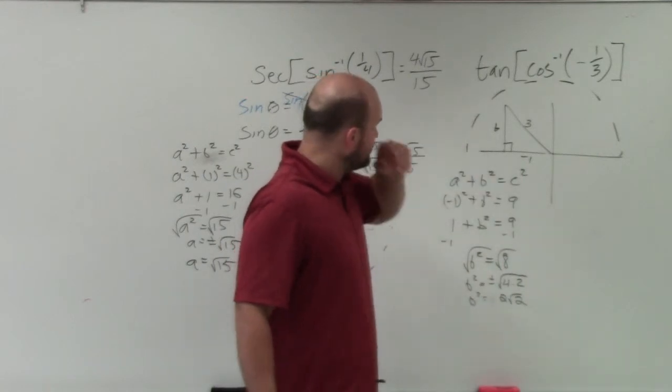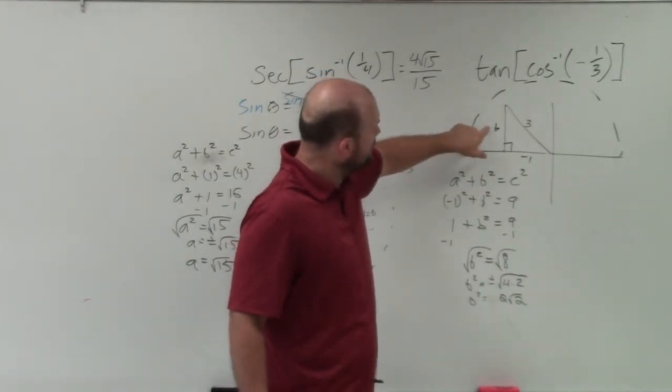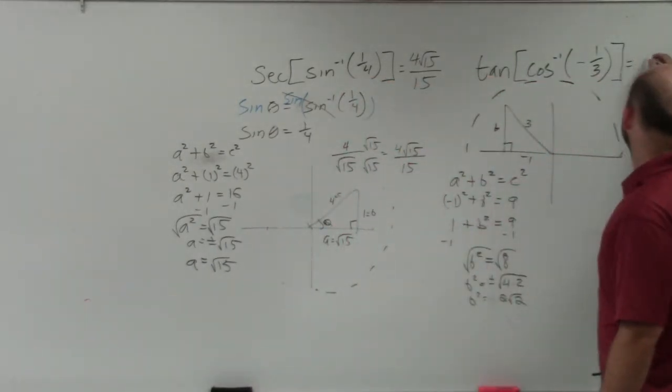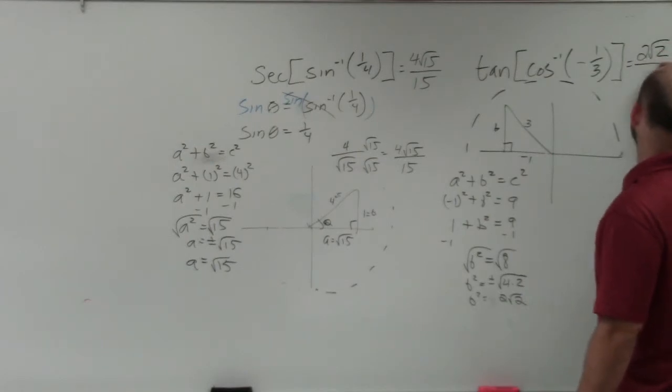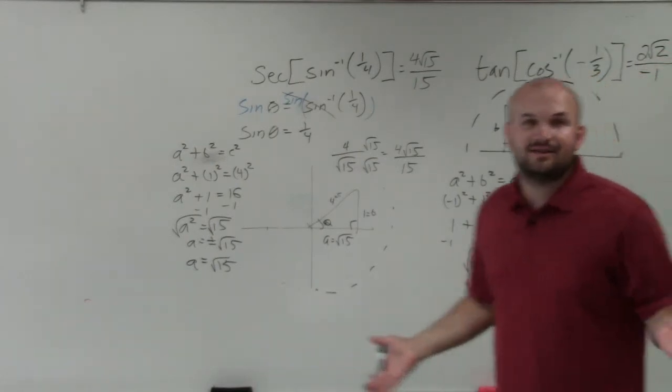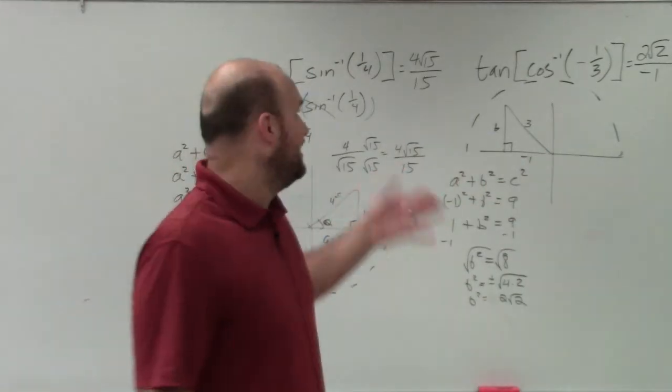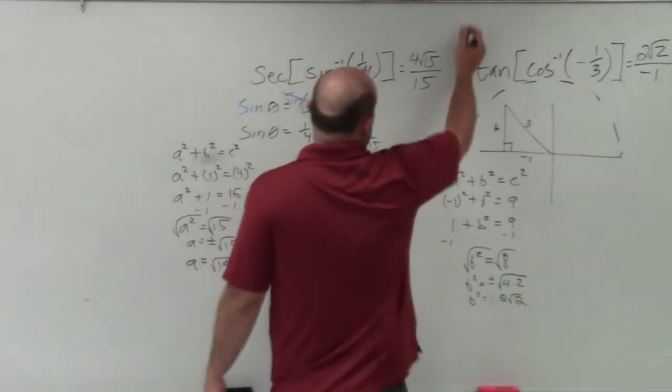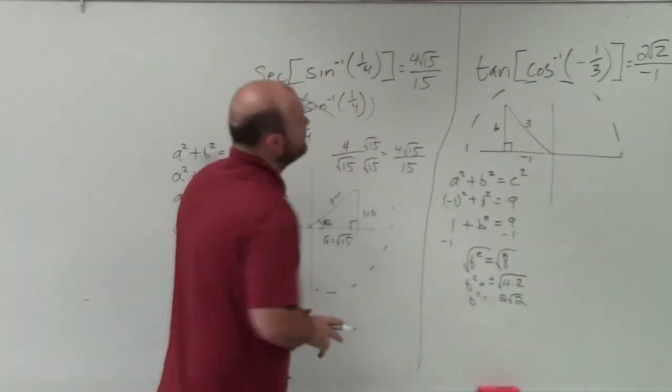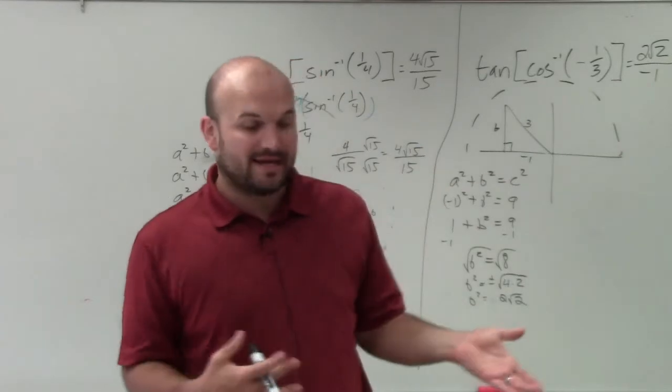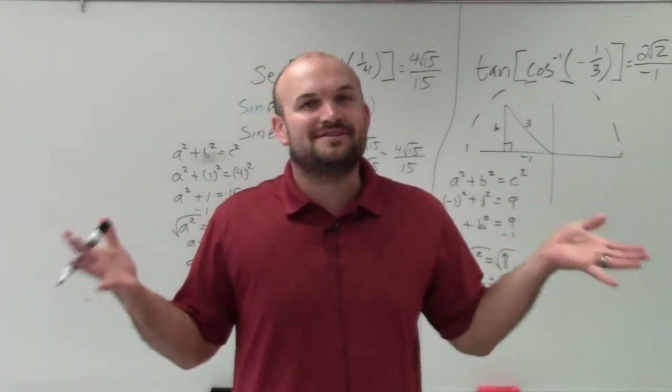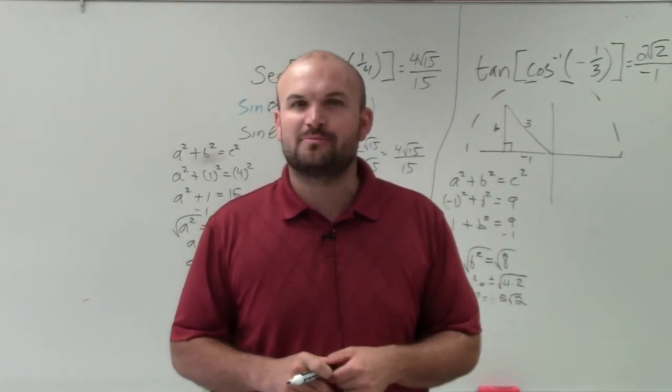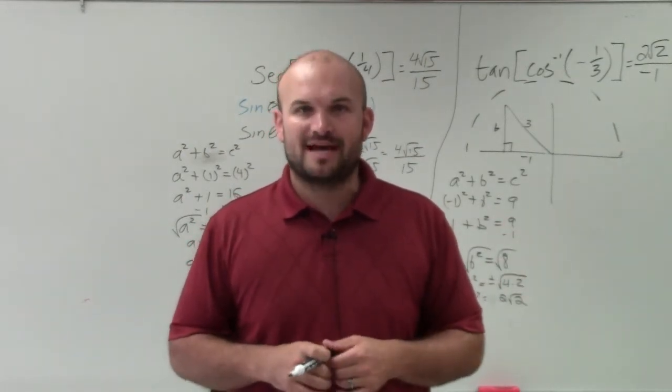So now, tangent is going to be opposite over adjacent. So therefore, I have 2 square root of 2 over negative 1. And if I had a little bit more space on my board, I'd write negative 2 square root of 2 as that is your final answer. But I just don't want to rewrite it because I ran out of space with my board. But there you go, ladies and gentlemen. That is how you complete the inverse trigonometric functions when you have a positive or negative by using triangles without having to use Pythagorean triples or knowing your Pythagorean triples actually having to do Pythagorean theorem. Thanks.